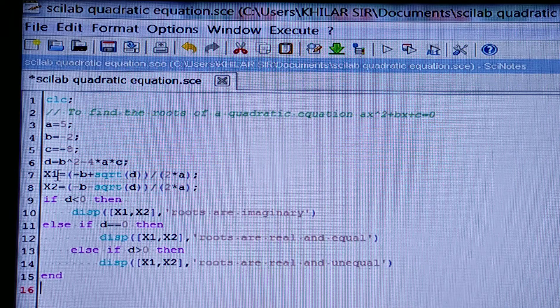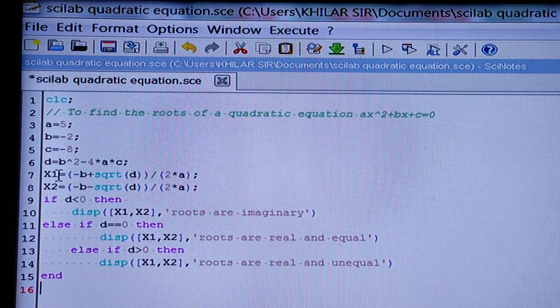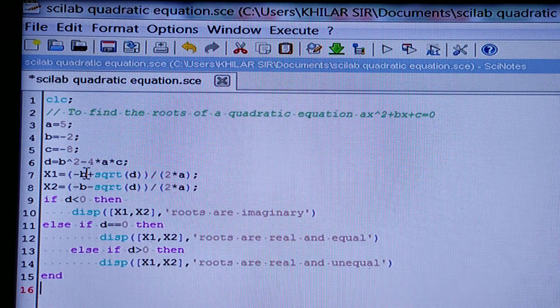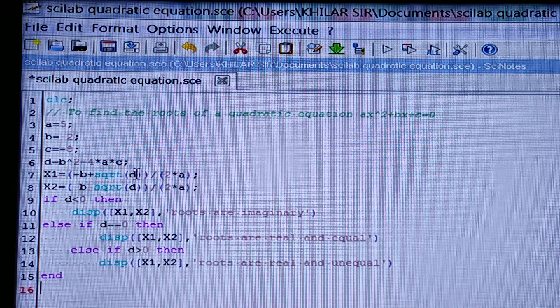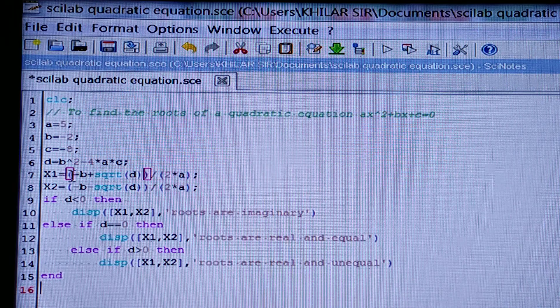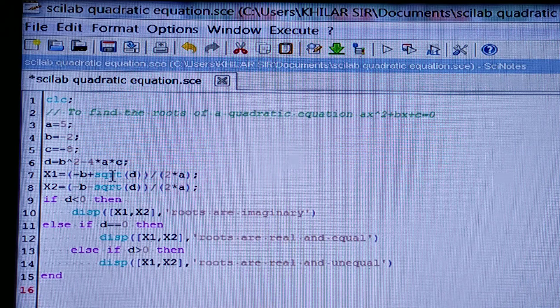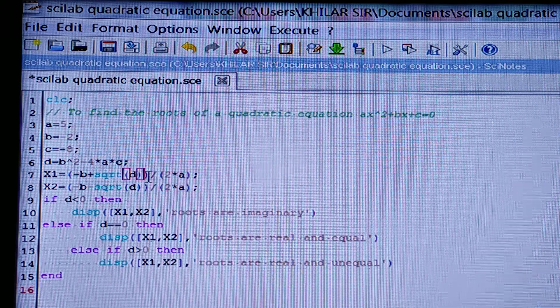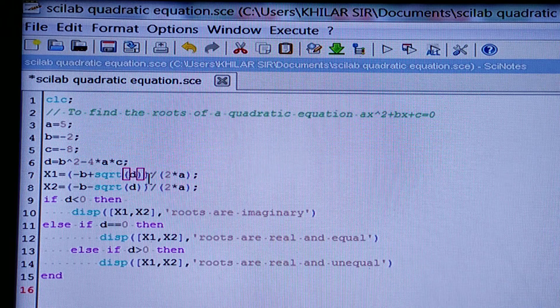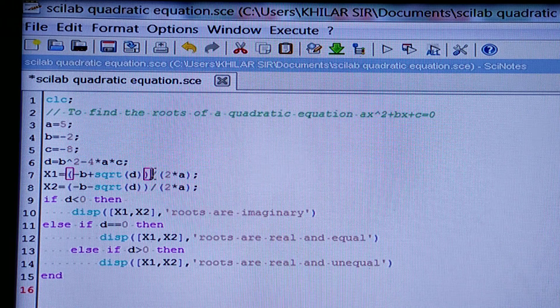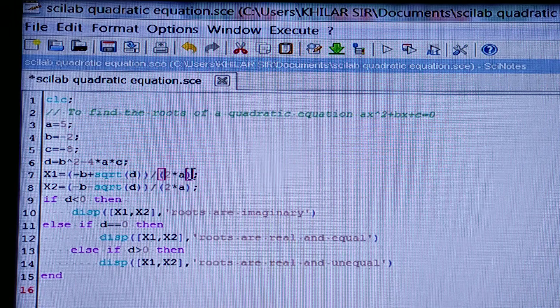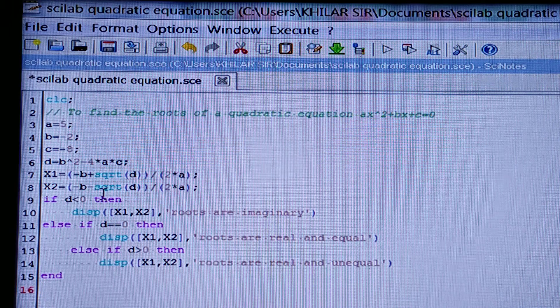Now X1, mindfully listen. X1 is equal to minus B plus square root of the discriminant divided by 2A, but you should put a bracket here. Minus B plus square root of D, you should put a bracket, that means you should write minus B plus square root of D within bracket, slash 2 star A. Then semicolon.